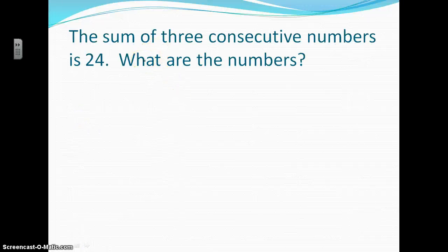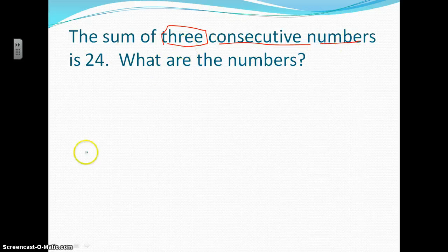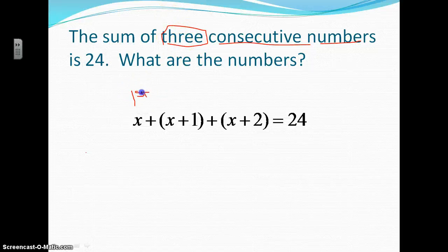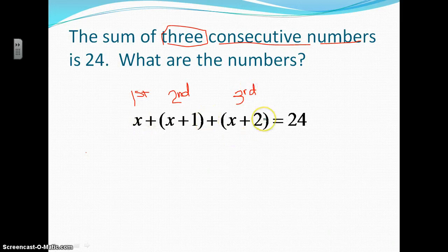Let's look at this one. It says the sum of 3 consecutive numbers is 24. So I want 3 consecutive numbers. I'm going to set it up as: X plus X plus 1 plus X plus 2 equals 24. This is my first number, this is my second number, and this is my third number. It asks for 3, so that's why I stopped at X plus 2. And it just said consecutive numbers, so I didn't skip in between.